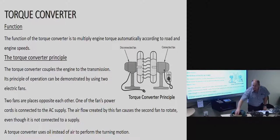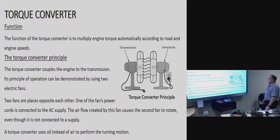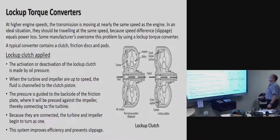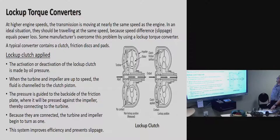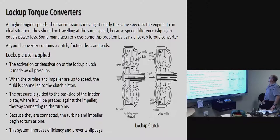That is the basic principle of how a torque converter works — except that instead of air, you are using oil to push from one blade to another. The oil is transferred from the impeller to the turbine. A torque converter uses oil instead of air to perform the turning motion.